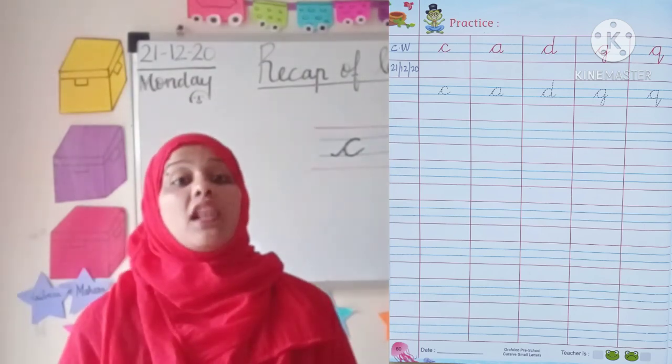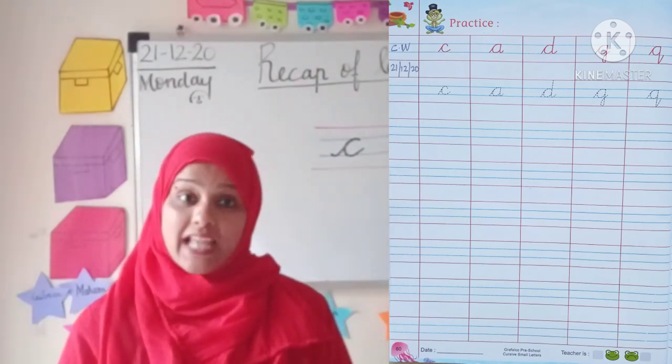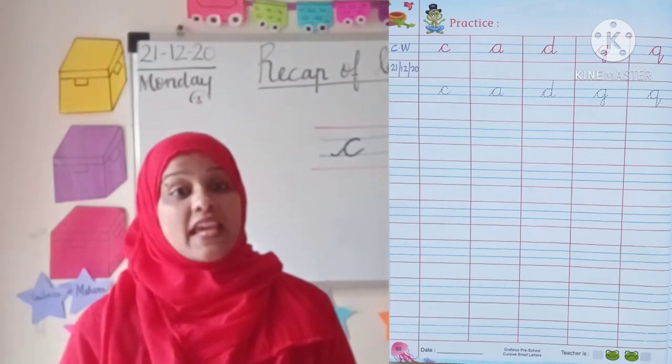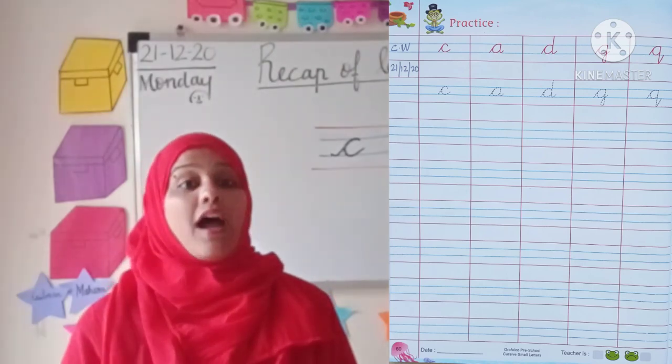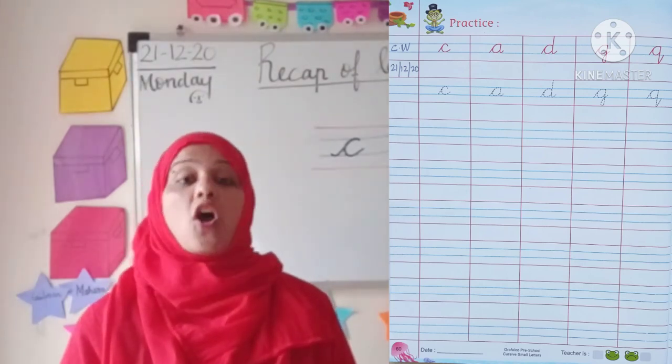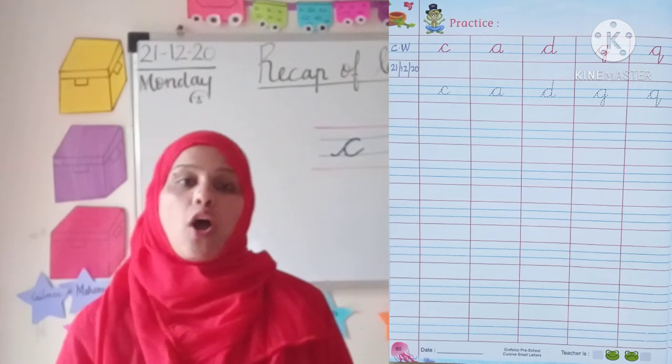Now, you need to write the letters directly on the next slide. Let's begin. C for Cat. D for Dog. A for Apple. G for Glass. Q for Queen.